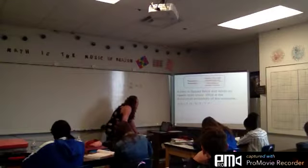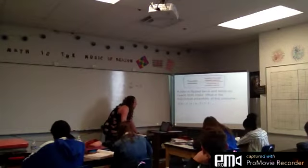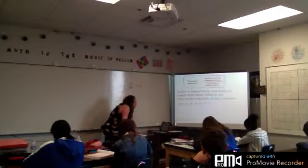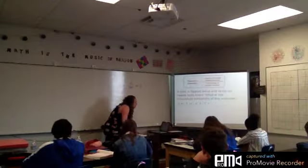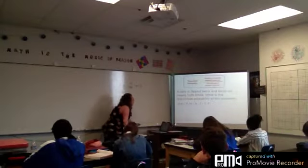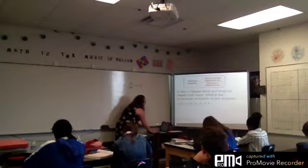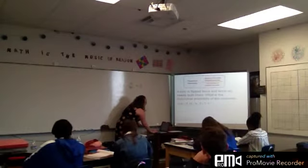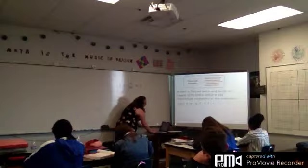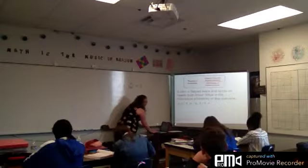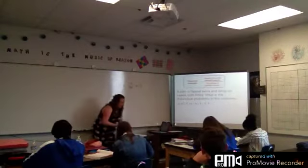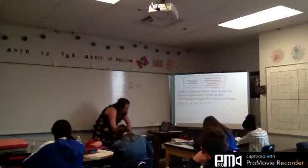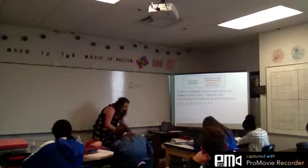Here it says a coin is flipped twice and lands on heads both times — what is the theoretical probability of this outcome? If we list the possibilities: heads-heads, tails-heads, heads-tails, tails-tails. They want to know what is the theoretical probability of getting heads-heads.